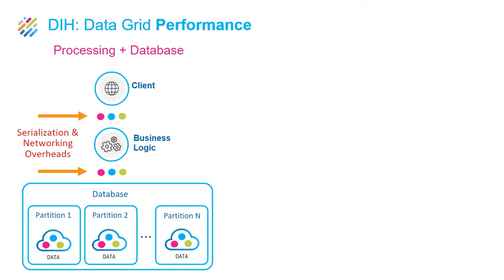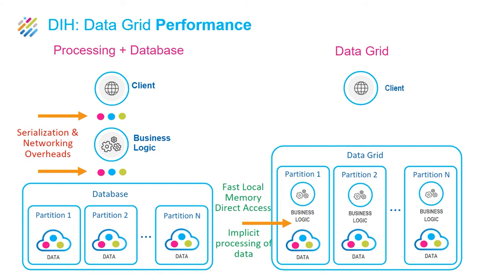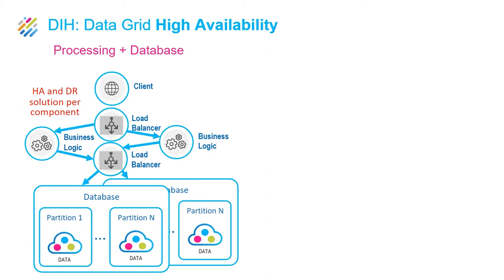There are three main advantages to data grids. First, performance: when you use separate processing with a database, you have serialization and networking overheads between the client, the business logic, and the database. With a data grid, everything is direct access — data is accessed natively in the same memory space. Performance rises from hundreds of thousands of events per second to tens of millions of events per second.